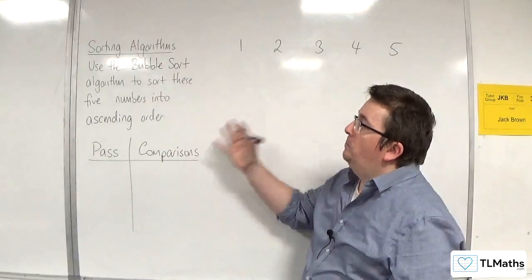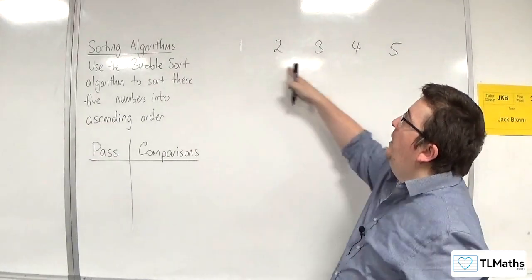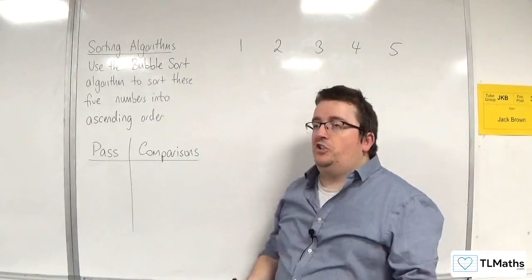In this video, we're going to use the bubble sort algorithm to sort these five numbers, 1, 2, 3, 4, 5, into ascending order.